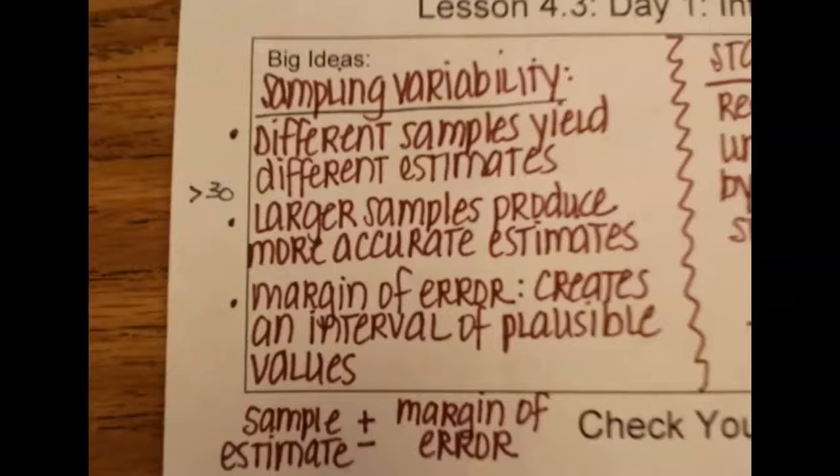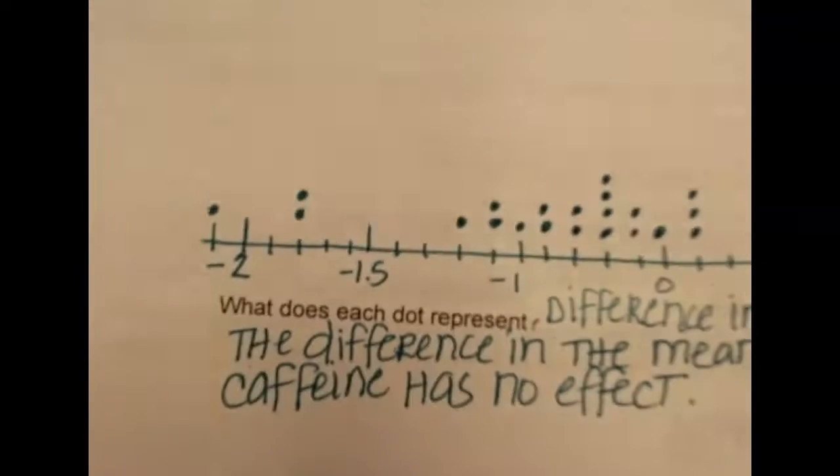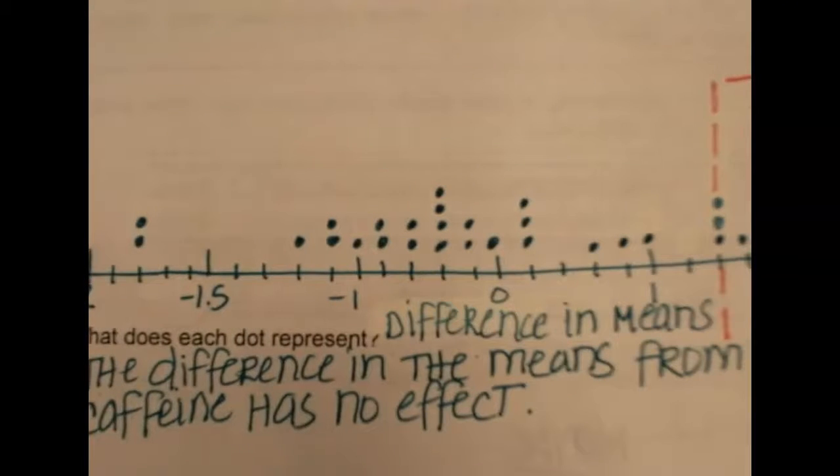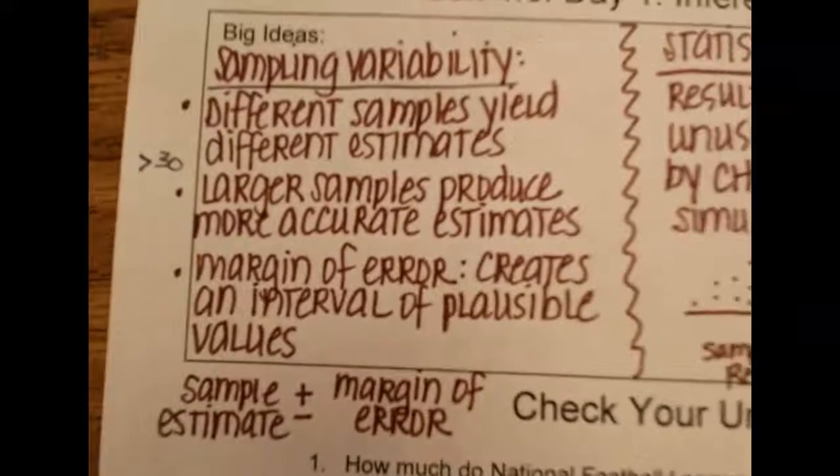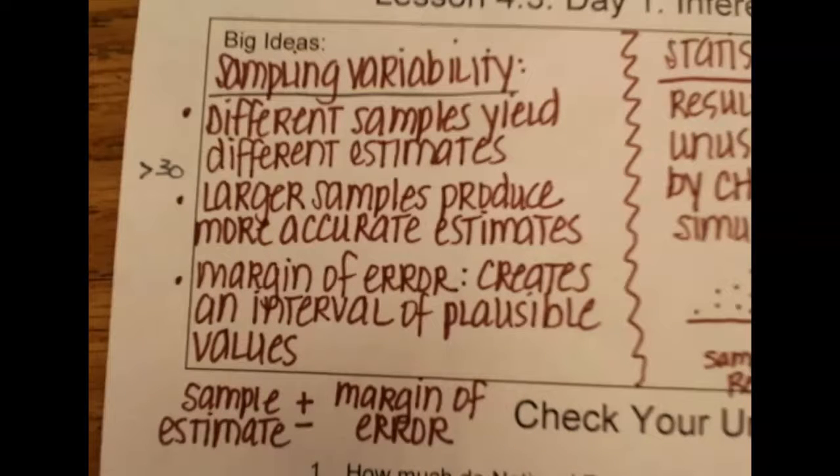Alright, to summarize what we talked about today, one thing, we had all those different dots on our graph, and they were all in different places, even though we all did the same process to get the number. And what that's called is sampling variability. That means in different samples you get different estimates, and that just makes sense. We're not all going to draw the exact same numbers in the exact same order to get the exact same answer.